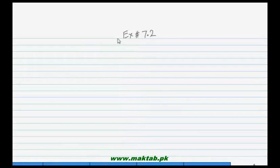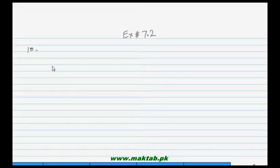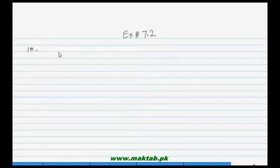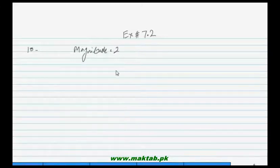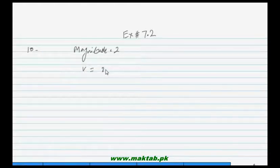Bismillah rahman rahim. Exercise 7.2, question number 10, part A: find two vectors of length two parallel to the vector v, where v is equal to 2i minus 4j plus 4k.